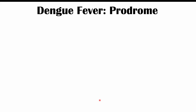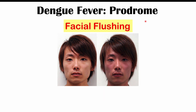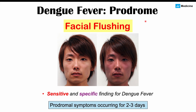Before we start to have the full-blown symptoms of dengue fever, we can have what we call the prodrome, or prodromal phase — some of the days that occur right before symptoms begin. One very interesting finding in this prodromal phase is facial flushing. Individuals may start to have reddening of the skin in certain parts of the body, or full-fledged facial flushing. This can actually be a sensitive and specific finding for dengue fever infections. Prodromal symptoms can often occur for two to three days.